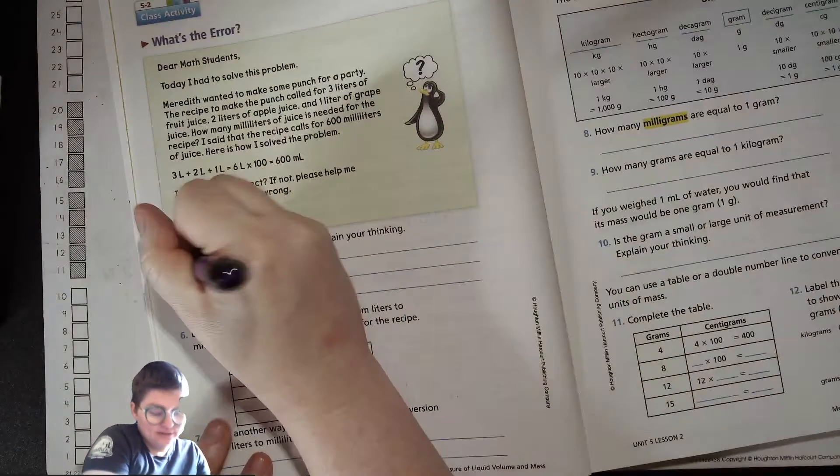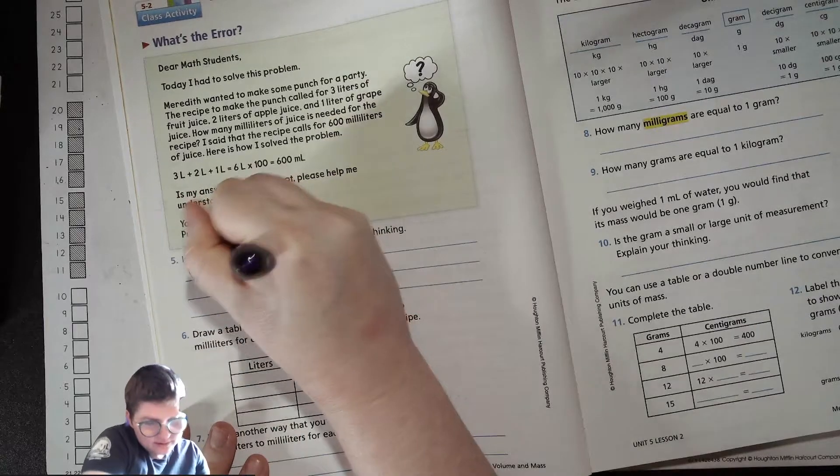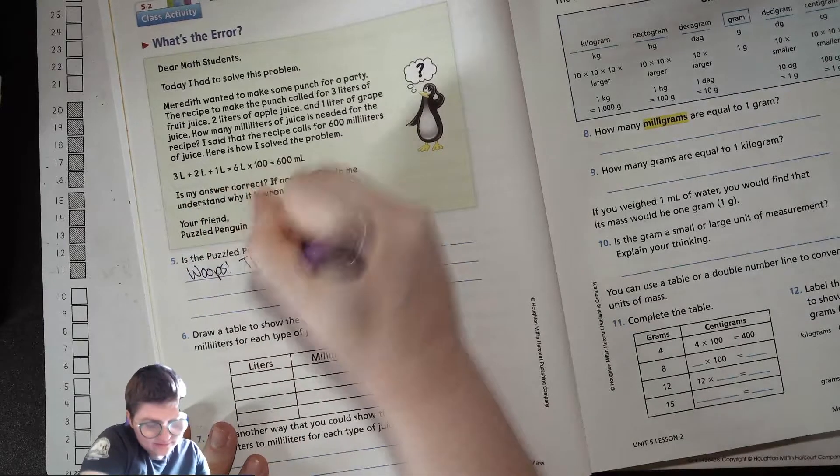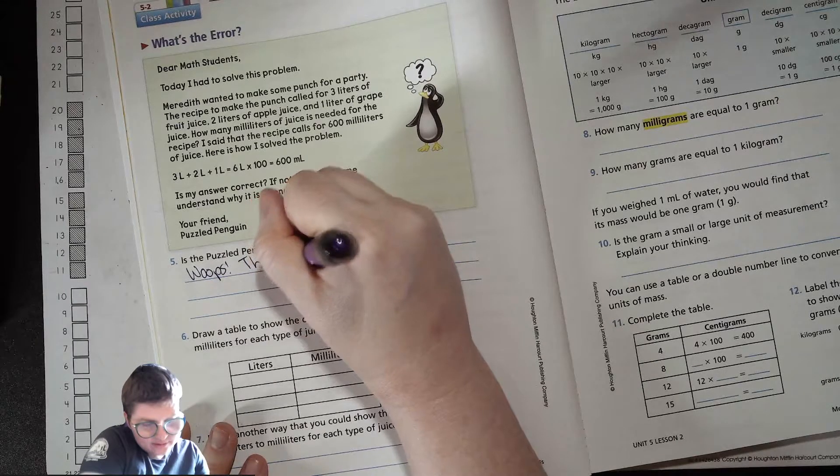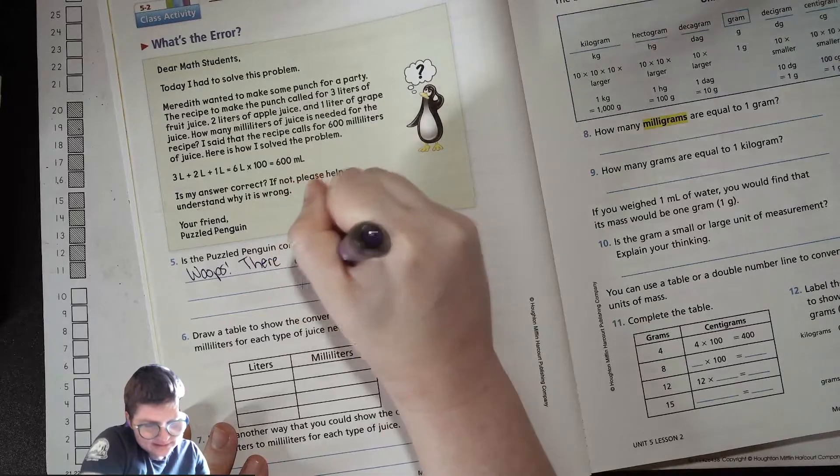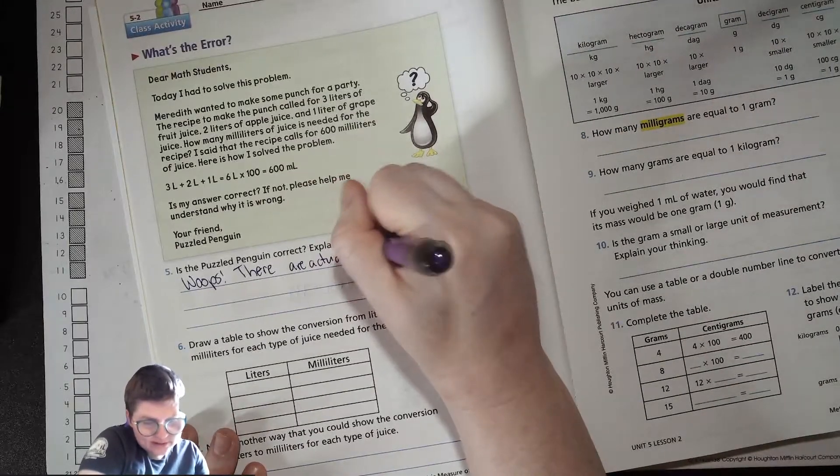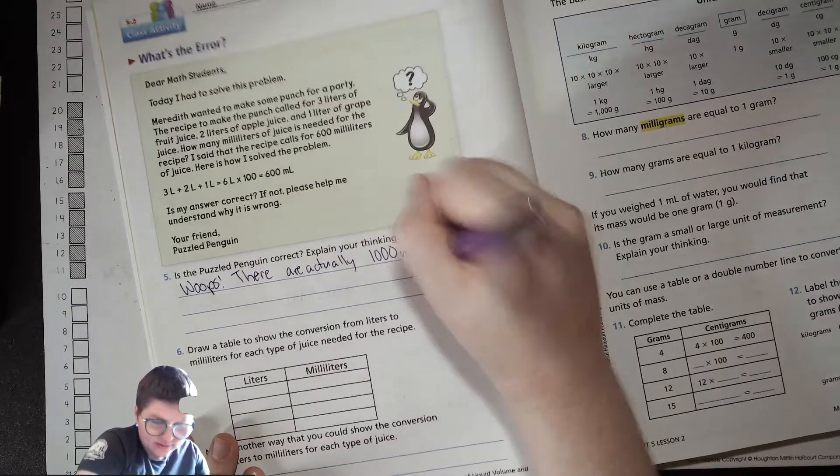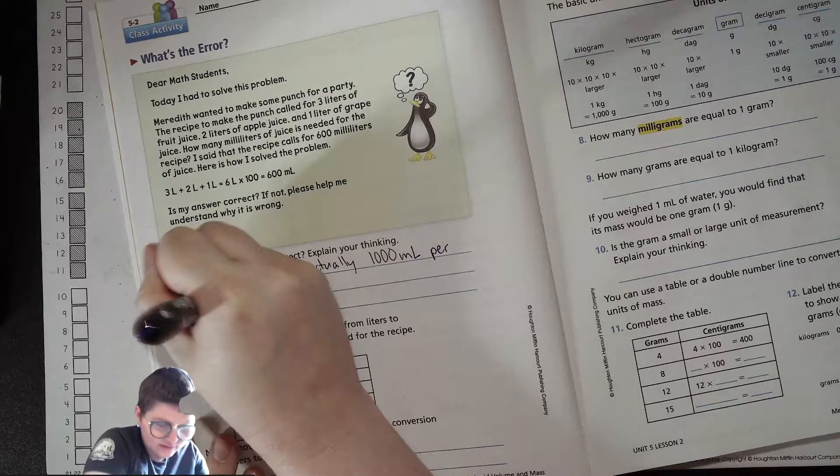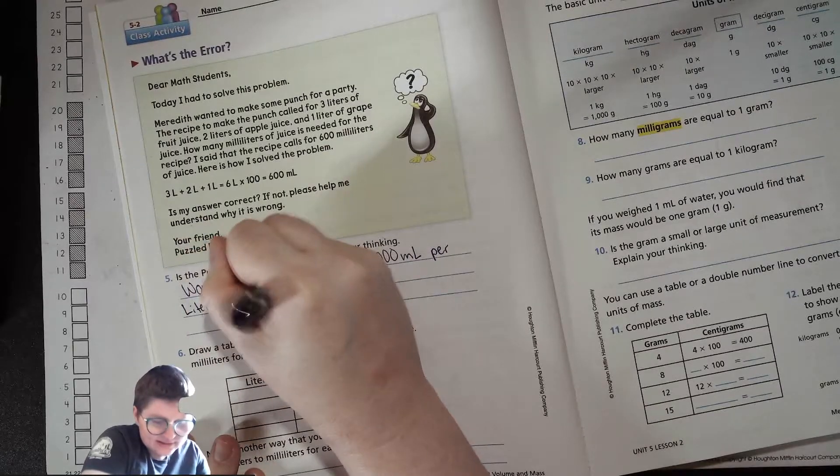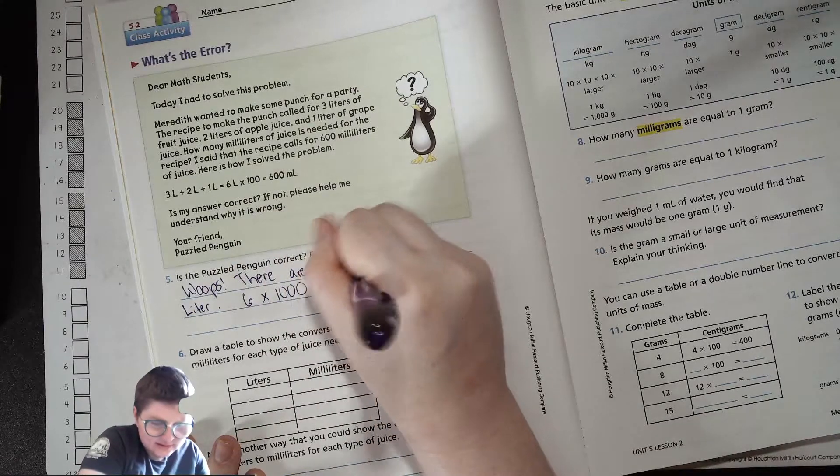We need to multiply by 1000 instead. So we'll say there are actually 1000 mL per liter. Six times 1000 equals 6000.